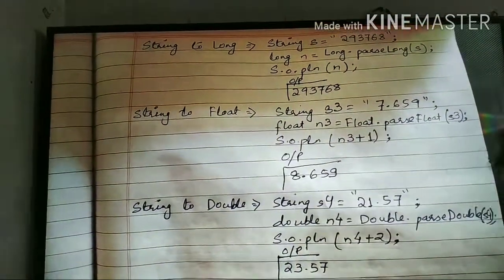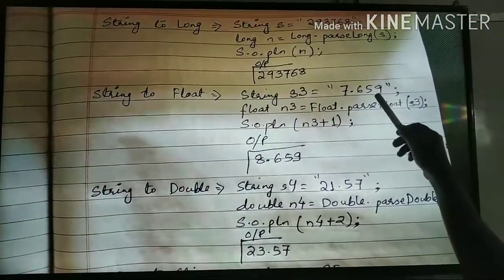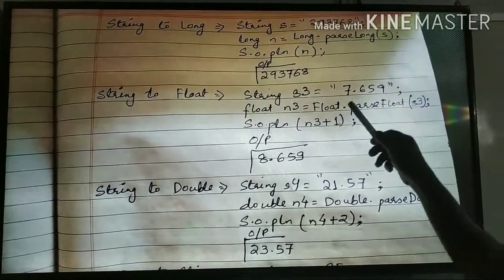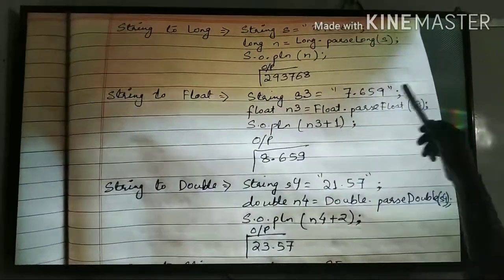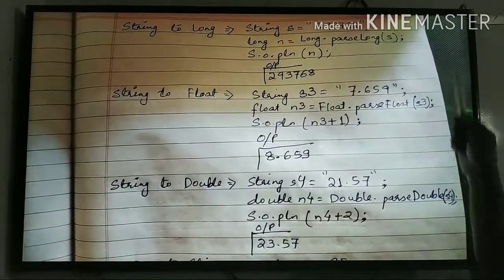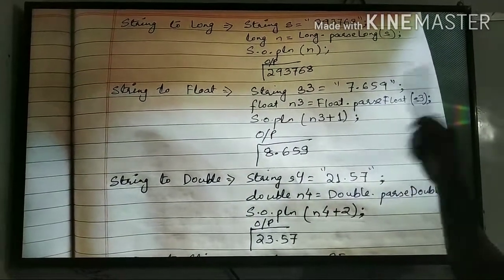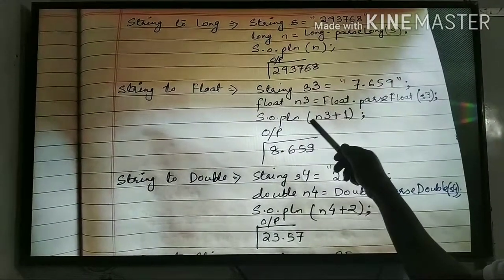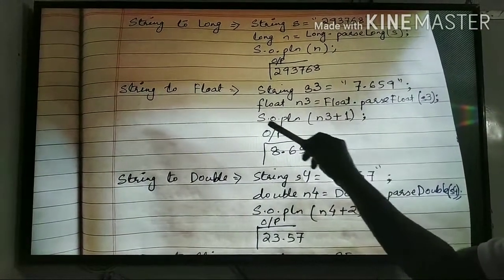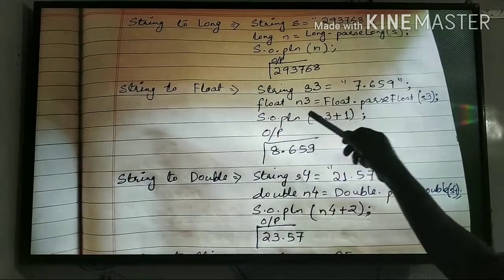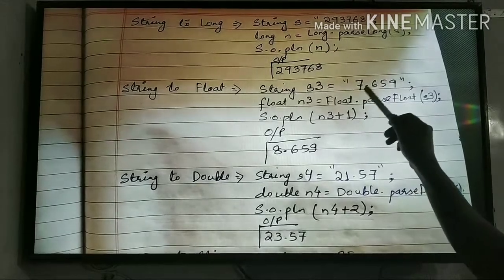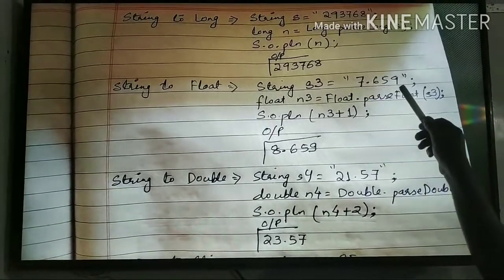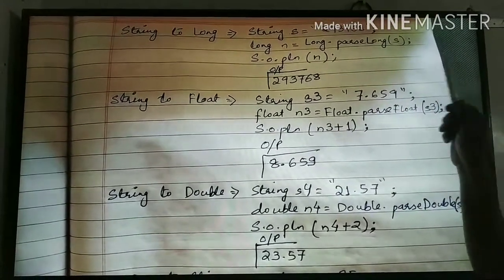Then string to float. String s3 = "7.659" — again this is of string type because it is within double quotes. The parseFloat method of the Float wrapper class converts s3, that is 7.659, into float type. So system.out.println(n3 + 1): n3 is 7.659 in float type, plus 1 will become 8.659. So that will be the output.